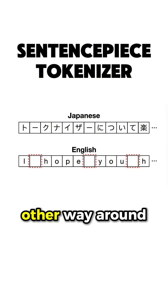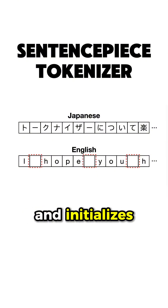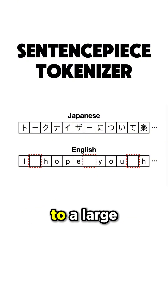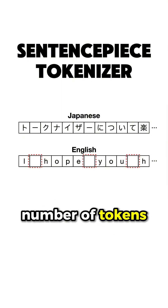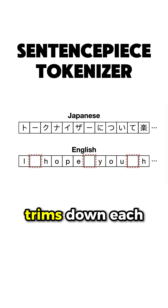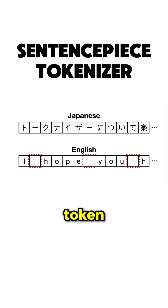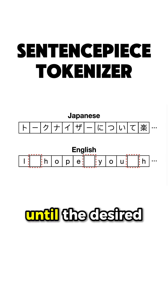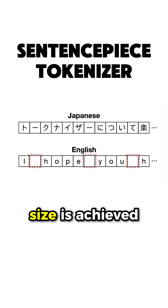which works the other way around and initializes its base vocabulary to a large number of tokens and then progressively trims down each token to obtain a smaller vocabulary until the desired size is achieved.